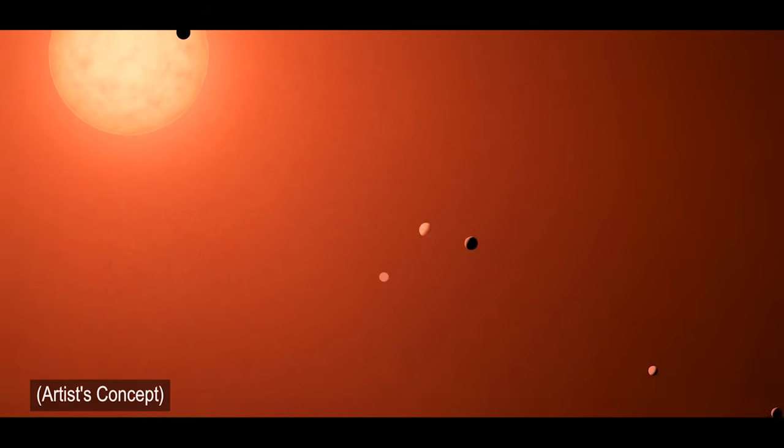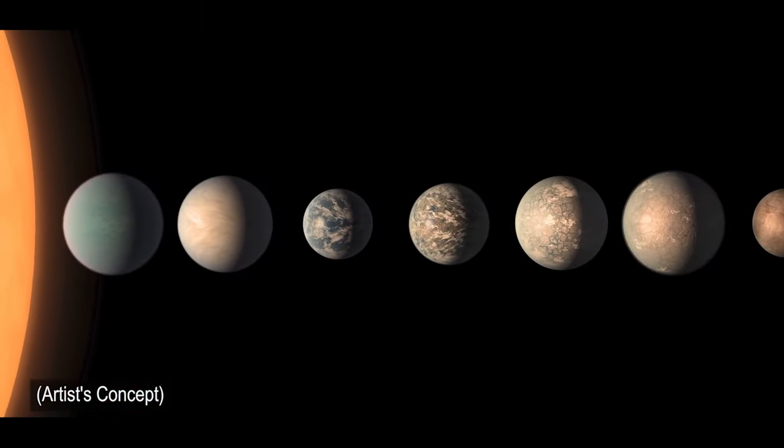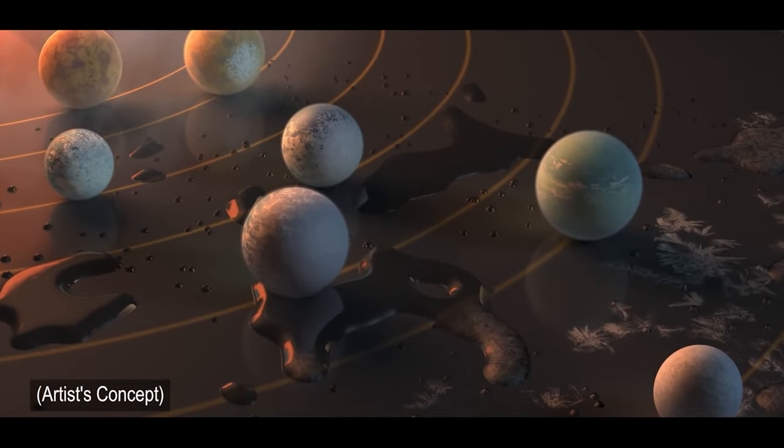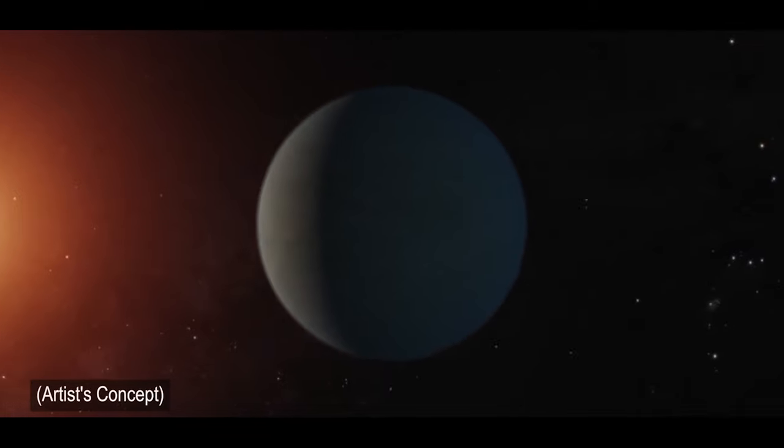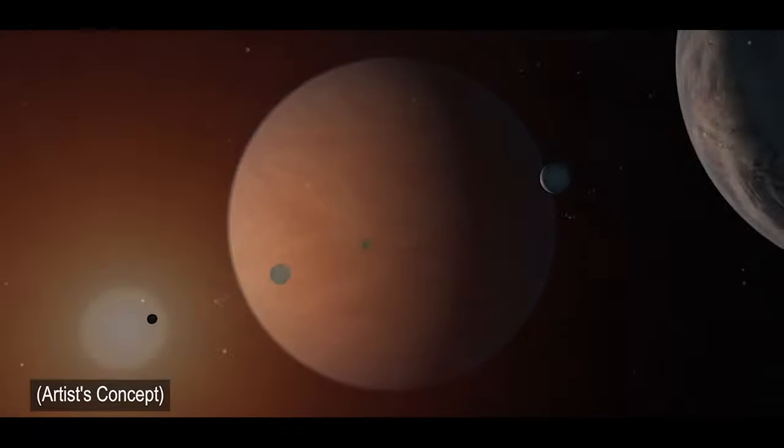It also discovered five of the seven Earth-sized planets in the TRAPPIST-1 planetary system, and these exoplanets are among the most interesting planets outside our solar system. More interesting, however, may be the discovery that cooler stars have a different mix of life-forming chemicals.